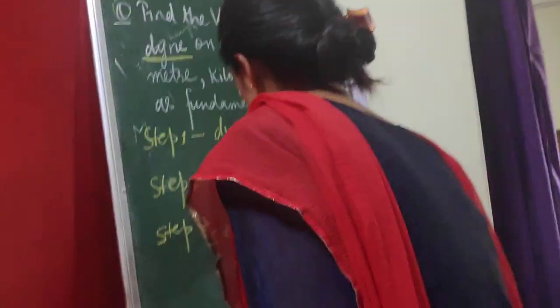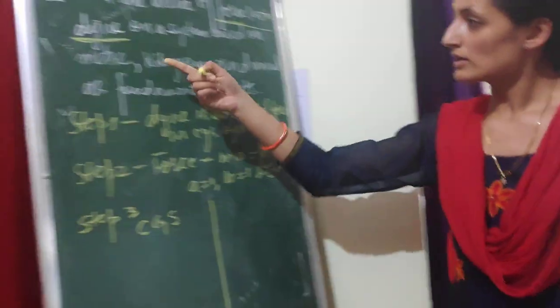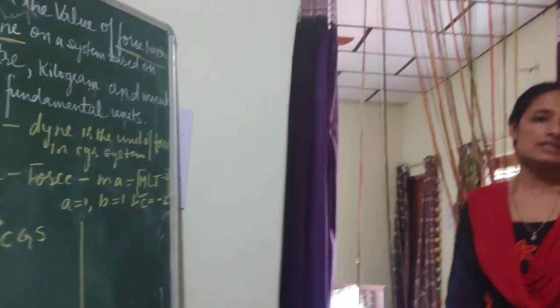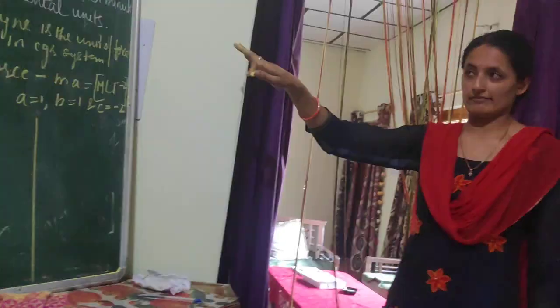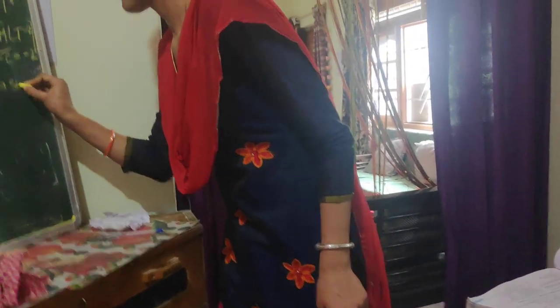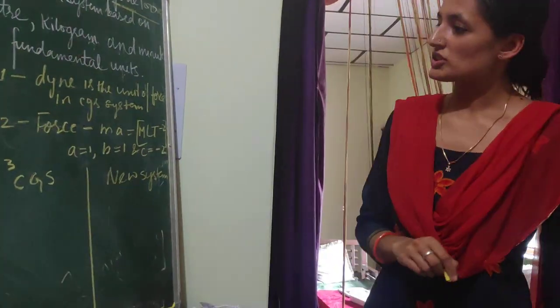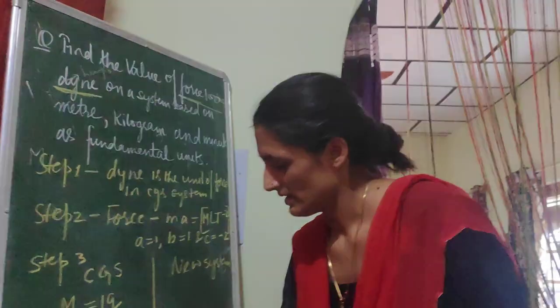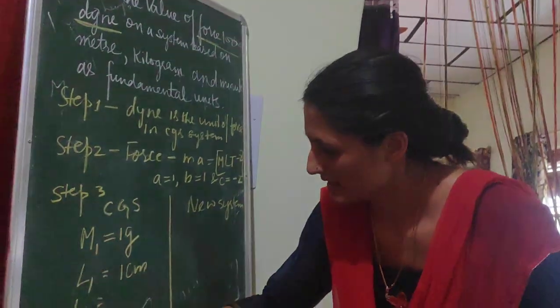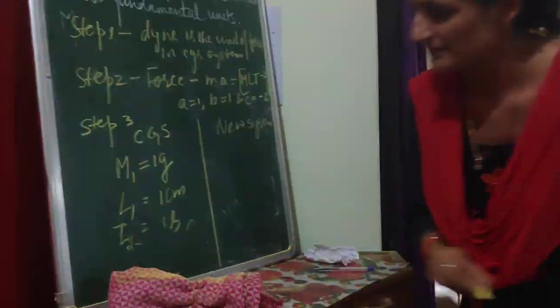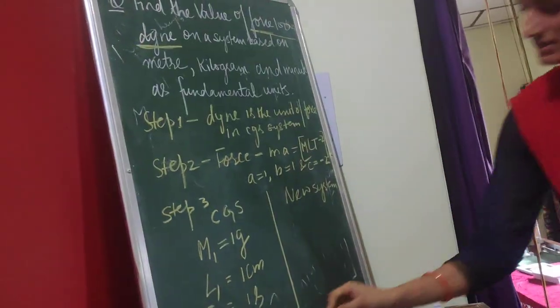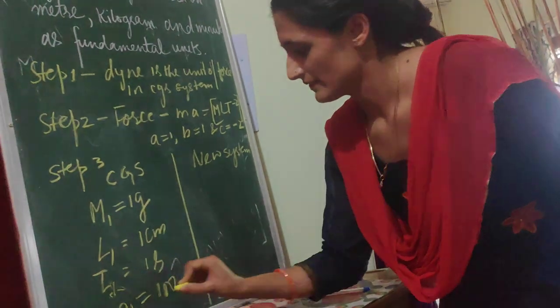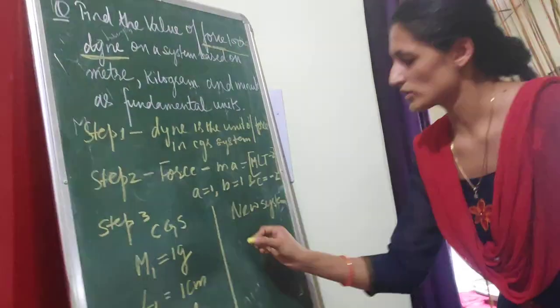Step three: identify which system you are converting from and to. We are going from the CGS system to a new MKM system. There are basically four systems of units: SI, MKS, CGS, and FPS. Since this is a new system, we write it as 'new system.' In the CGS system: M1 is 1 gram, L1 is 1 centimeter, T1 is 1 second, and N1 is 100.